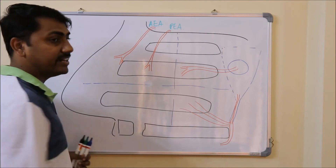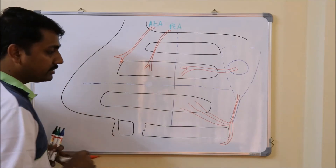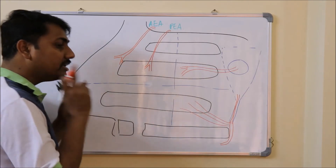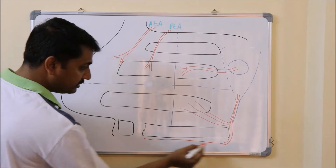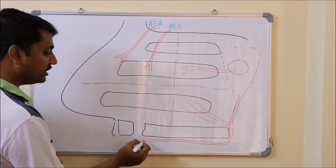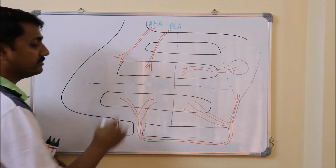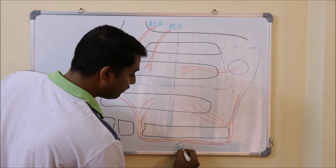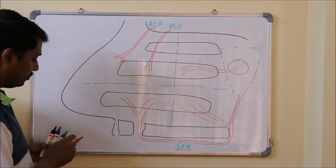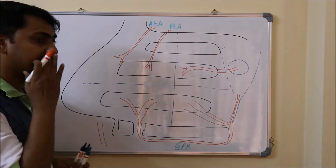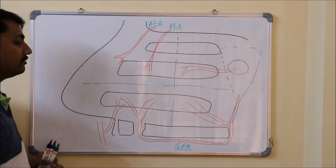Now look into the anteroinferior quadrant. The anteroinferior quadrant is supplied by two arteries: branches from the facial artery and from the greater palatine artery. The greater palatine artery, when it comes into the oral cavity, goes along the lateral part of the hard palate, runs through the groove in the hard palate, and enters through the incisive fossa or incisive canal into the nasal cavity to supply the anteroinferior quadrant. This is also supplied by lateral branches from the facial artery, which supply the lateral wall of the nose in the anteroinferior quadrant.